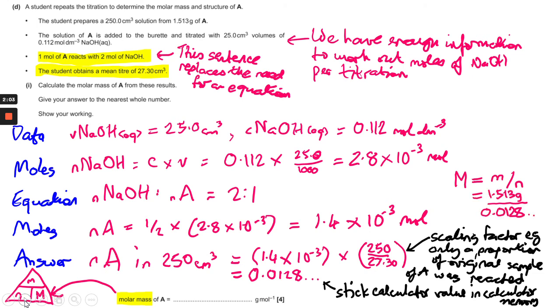So that's going to be 1.513 over your calculator value that you can now recall from the calculator memory, and that gives you 118.014. But it tells you to give the answer to the nearest whole number, so you just take off the 0.014 and round down to 118, and that's your final answer.